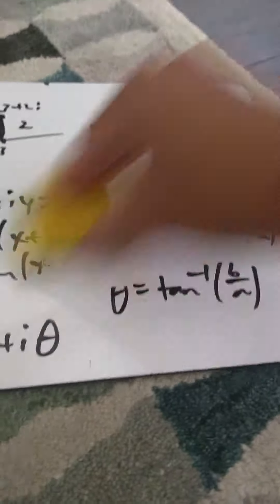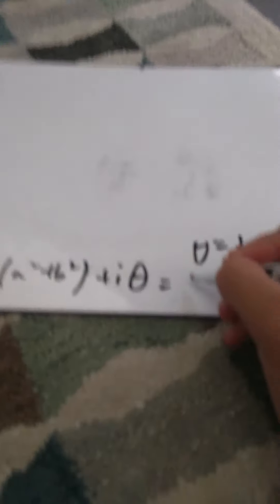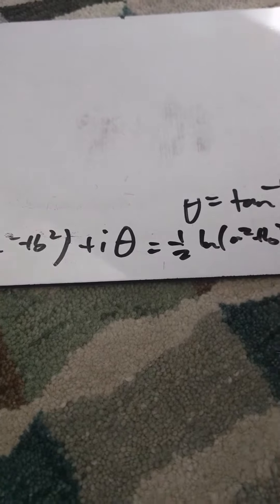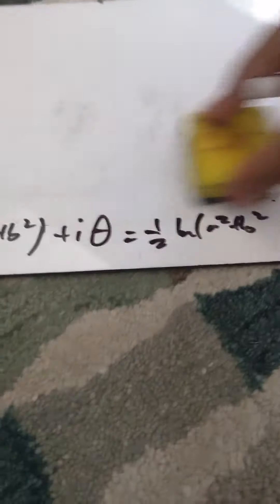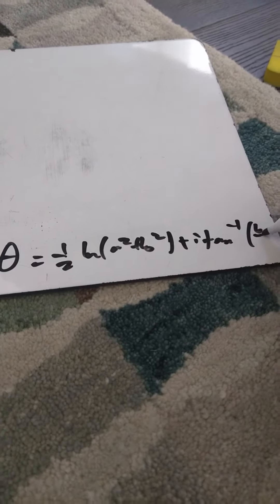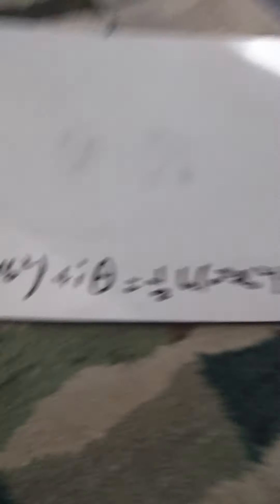So now we can write the final result as one half ln(a² + b²) — that's the real part — plus i times the arctangent of b over a. And there we go.